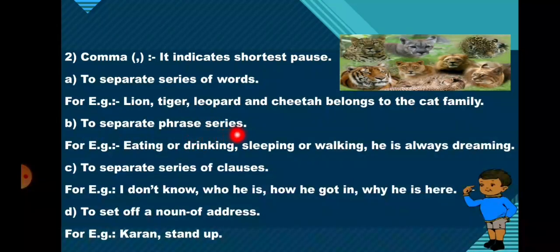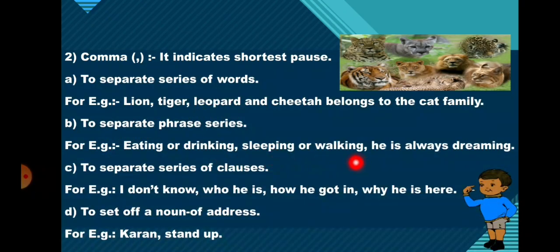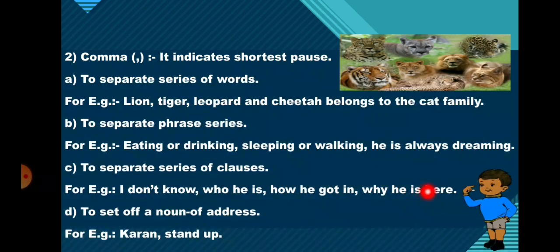The comma is also used to separate a phrase series. For example: eating or drinking, sleeping or walking — he is always dreaming. So in order to separate a phrase series, we put a comma in between. It is also used to separate a series of clauses. For example: I don't know who he is, how he got in, why he is here. So in order to separate a series of clauses, we put a comma in between.